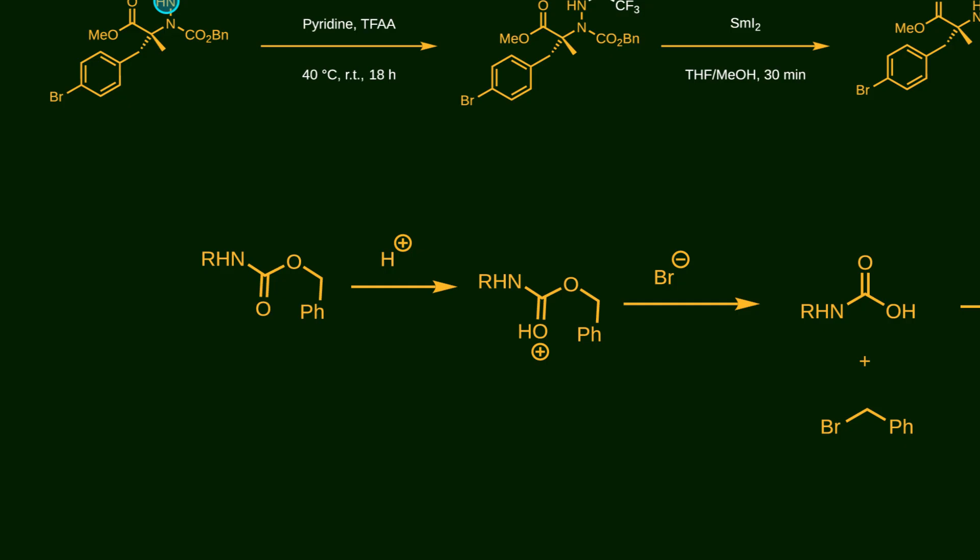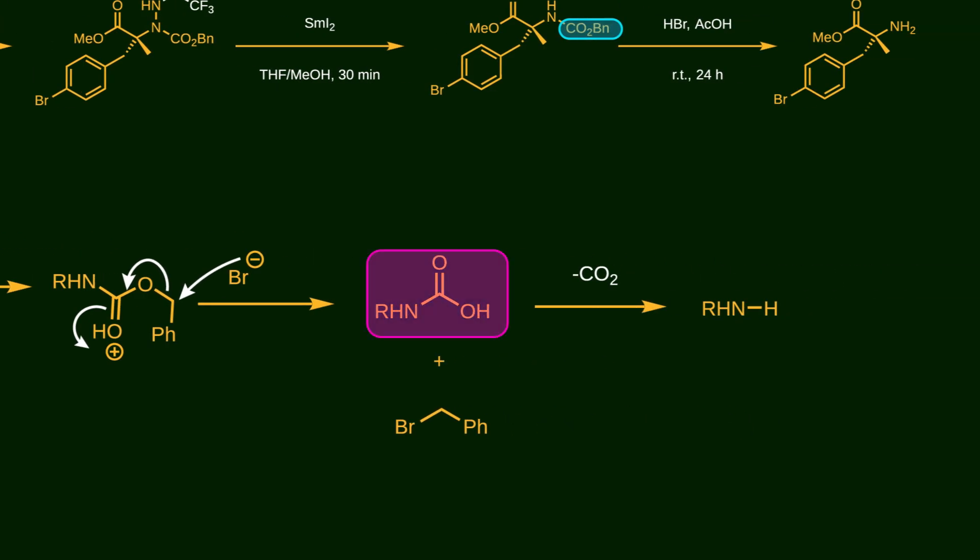First, the carbamate's carbonyl group is protonated, setting the stage for attack by bromide ion, leading to cleavage of the benzylic carbon-oxygen bond. The resulting unsubstituted hydrogen carbamate is unstable, so it decomposes to release carbon dioxide, leaving behind the free amine.